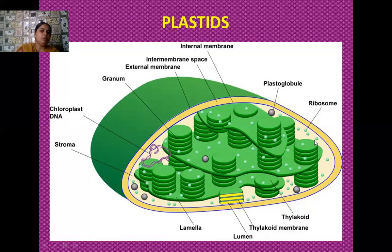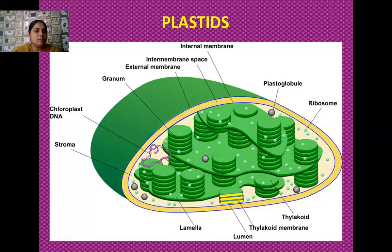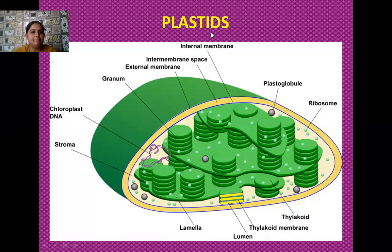Many grana in the form of piles are present in the stroma of the chloroplast. The chloroplast also has its own DNA because it is semi-autonomous, and ribosomes are present for protein synthesis. Different types of enzymes for the synthesis of carbohydrates and proteins are also present in the chloroplast. The ribosomes present in the chloroplast are 70S ribosomes, which are smaller in size than eukaryotic 80S ribosomes. That's all for today's lecture.